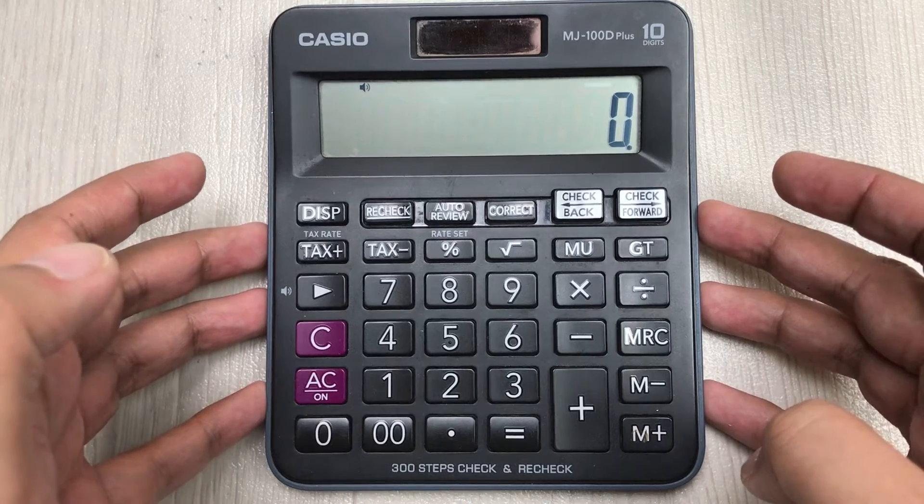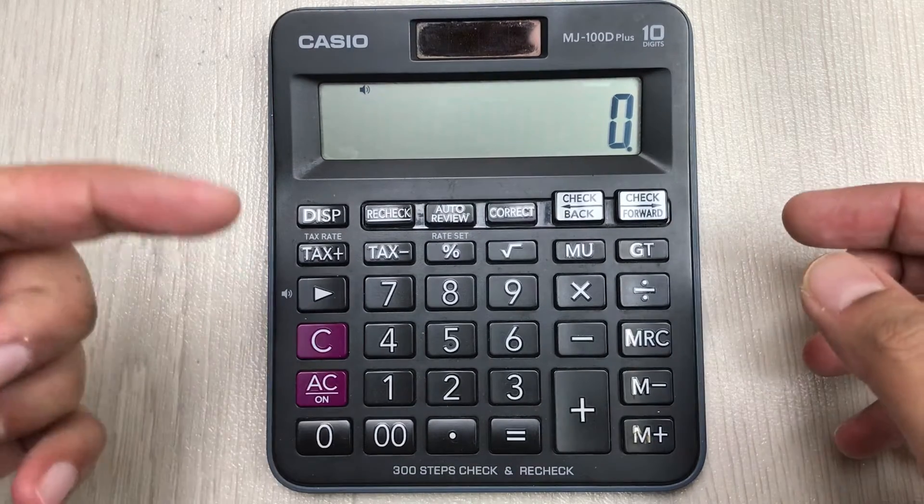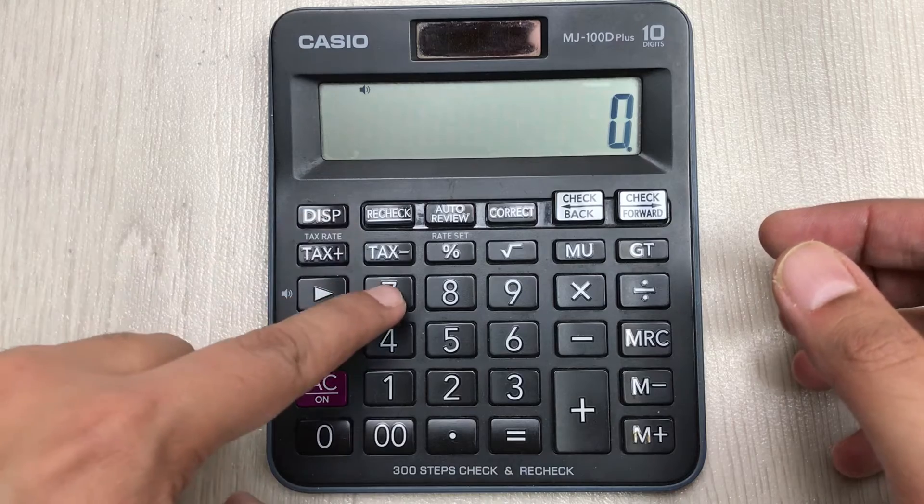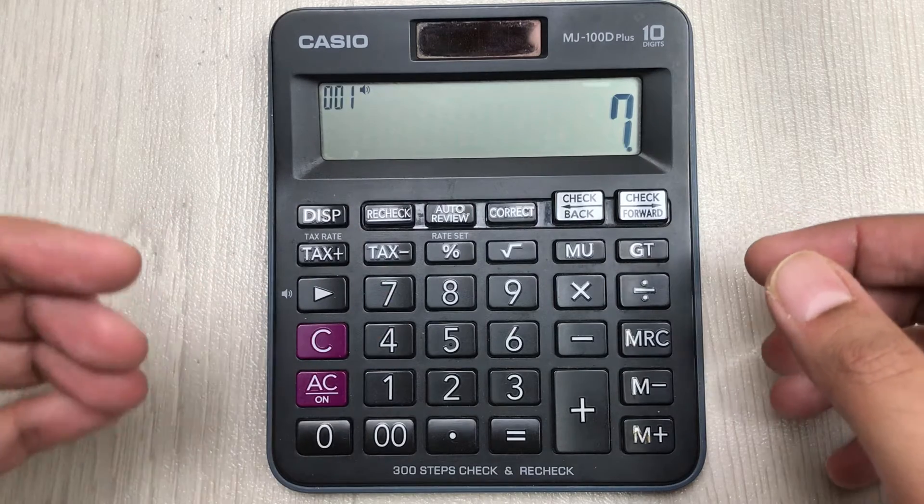In the first step we type 7. In the second step we press this square root button 19 times.